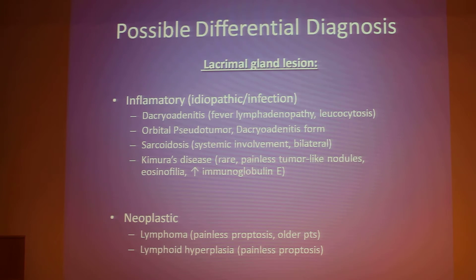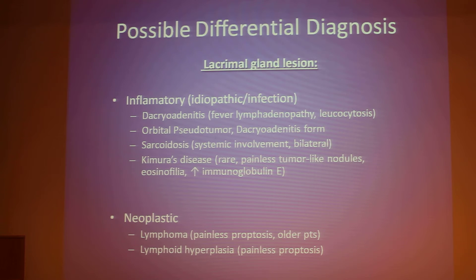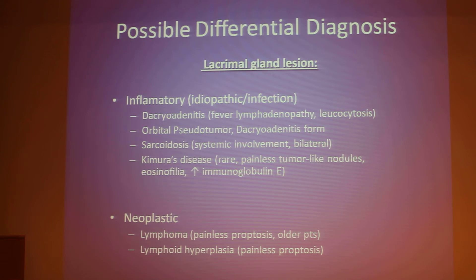Lacrimal gland lesions may be broadly classified into two groups: inflammatory and neoplastic. Inflammatory disorders cause diffuse enlargement of the lacrimal gland. Infectious dacryoadenitis is the most common pathology of the lacrimal gland, but since there is no fever, lymphadenopathy, or leukocytosis, this diagnosis is less likely in our case. Sarcoidosis is also less likely due to the normal chest X-ray and unilateral localization of the lesion; in most cases of sarcoidosis there is systemic involvement and usually bilateral lacrimal gland involvement.